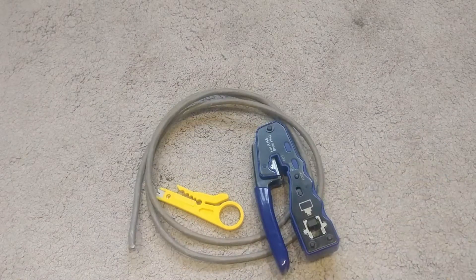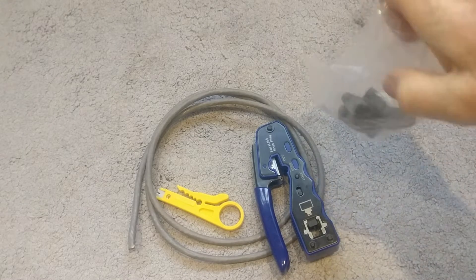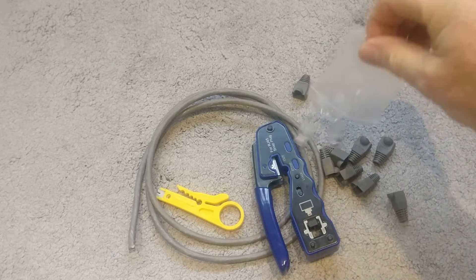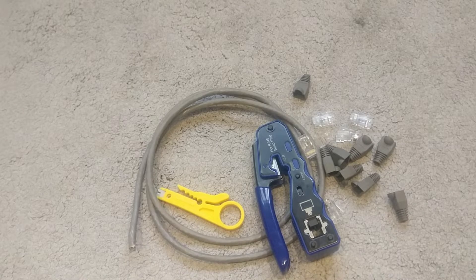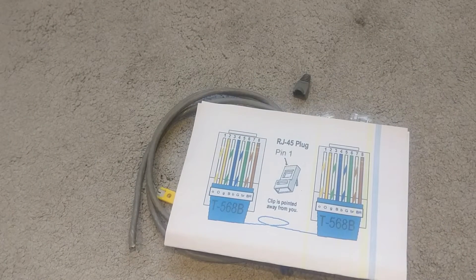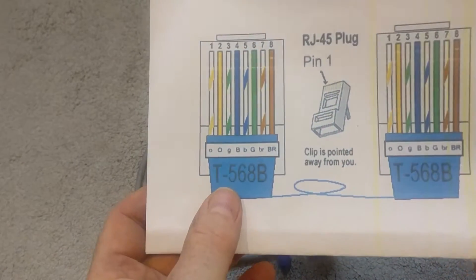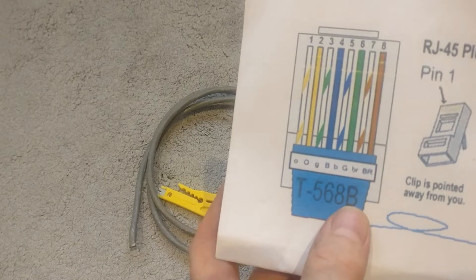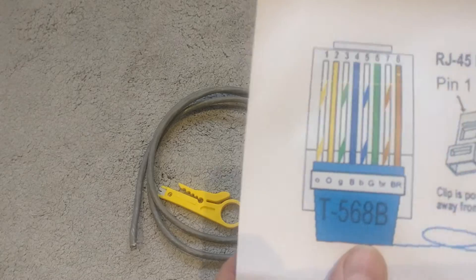You're also going to need an RJ45 crimping tool, some rubber boots, and most importantly, some pass-through RJ45 connectors. You're also going to need a wiring diagram. There's two wiring diagrams, A and B standard. B is the most common, so I'm going to use B. You can use either, it doesn't really matter as long as they're the same at each end.